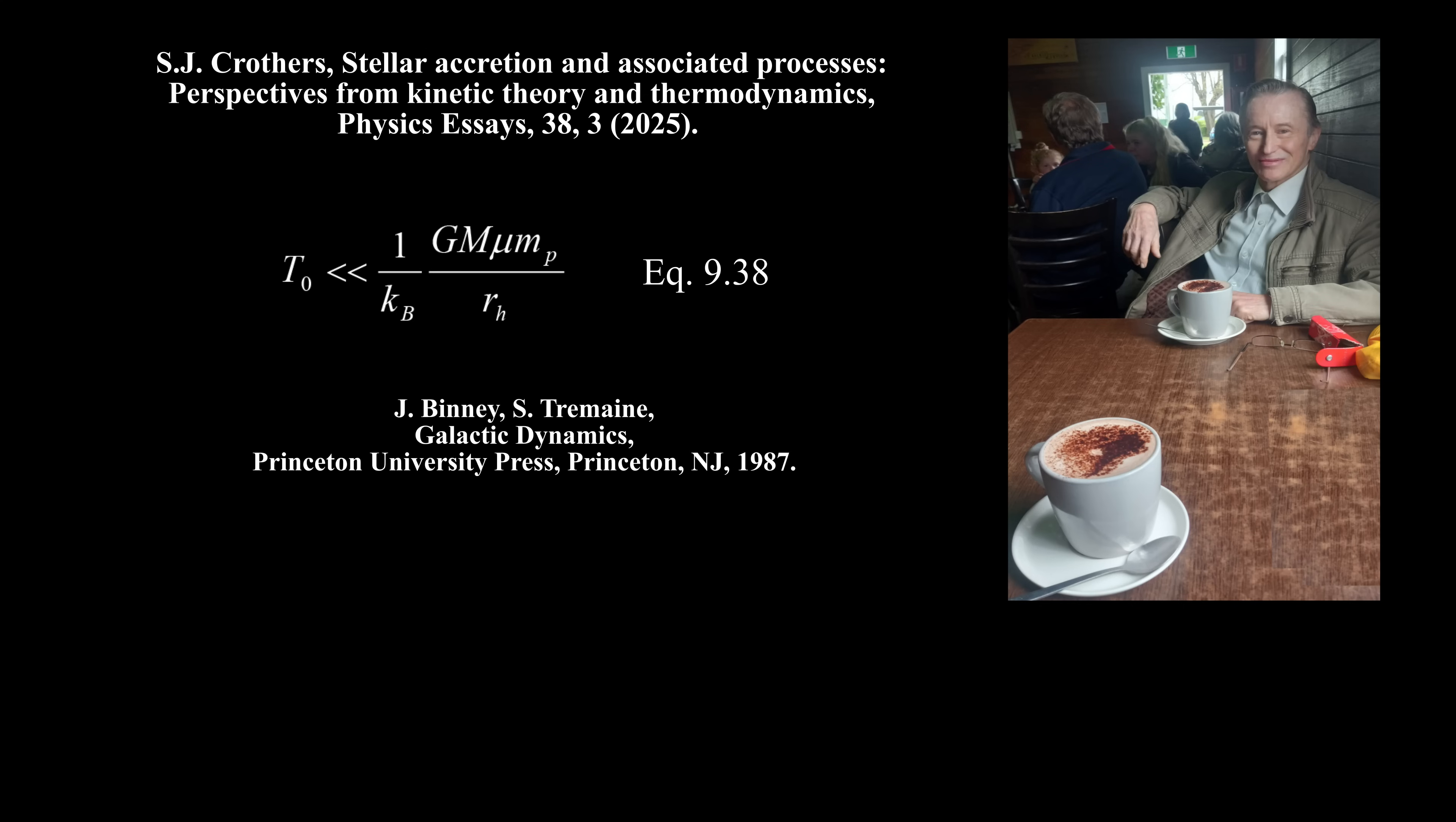The theory of galaxy formation and evolution is afflicted by the same malaise. For example, in their book Binney and Tremaine assert, at their equation 9.38, that the critical temperature for the collapse of a protogalactic cloud is given by this expression. They combine the ideal gas law with gravity and apply the Virial theorem to obtain a Virial temperature at their equation 9.40. In both of these equations, the left side is intensive, but the right side is extensive, and gravitational potential energy is assigned to temperature. These equations are therefore invalid.